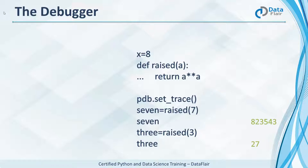Press enter, then 'l', and it lists out the entire code in this file. 'n' executes this line and gets to the next one. Now x is 8. The raised function raises a number to itself. We introduce a breakpoint. Now raised of 7 is 823,543 and raised of 3 is 27. This way we have many commands with the debugger.